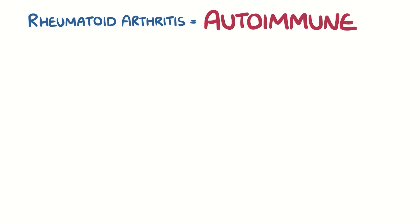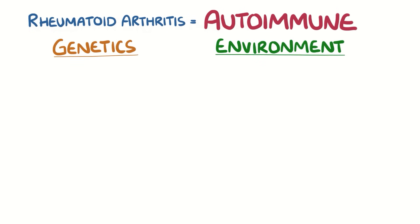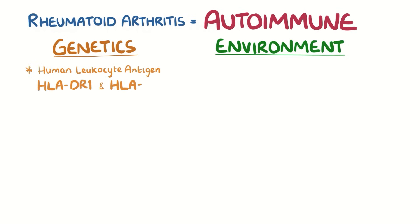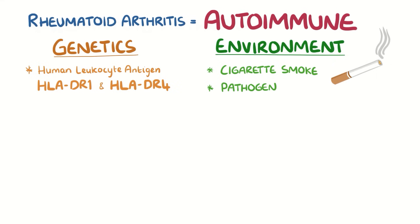Rheumatoid arthritis is an autoimmune process that is typically triggered by an interaction between a genetic factor and the environment. For example, a person with a certain gene for an immune protein, like human leukocyte antigen or HLA-DR1 and HLA-DR4, might develop rheumatoid arthritis after getting exposed to something in the environment, like cigarette smoke or a specific pathogen, like a bacteria that lives in the intestines.